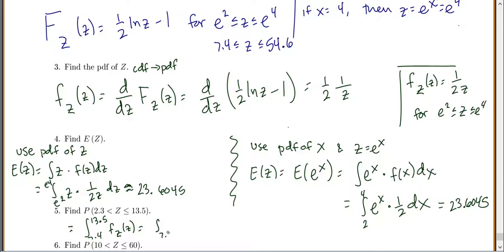Let's see, so we want to integrate from 7.4 to 13.5. The PDF of z is 1 over 2z, and this gives me 0.3.